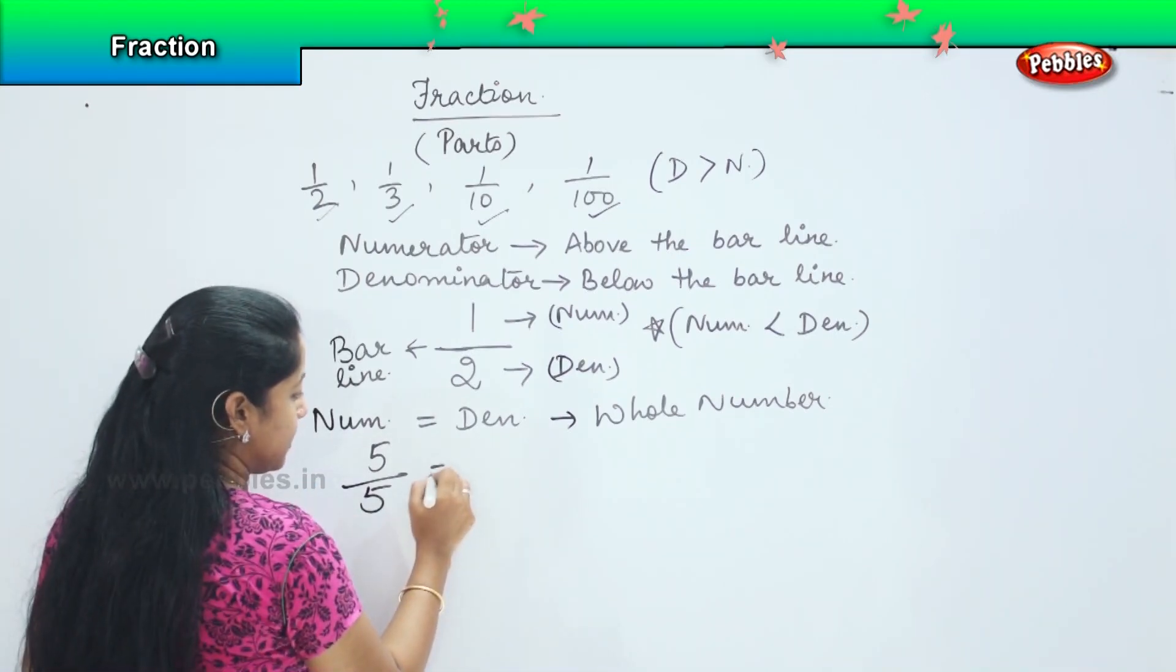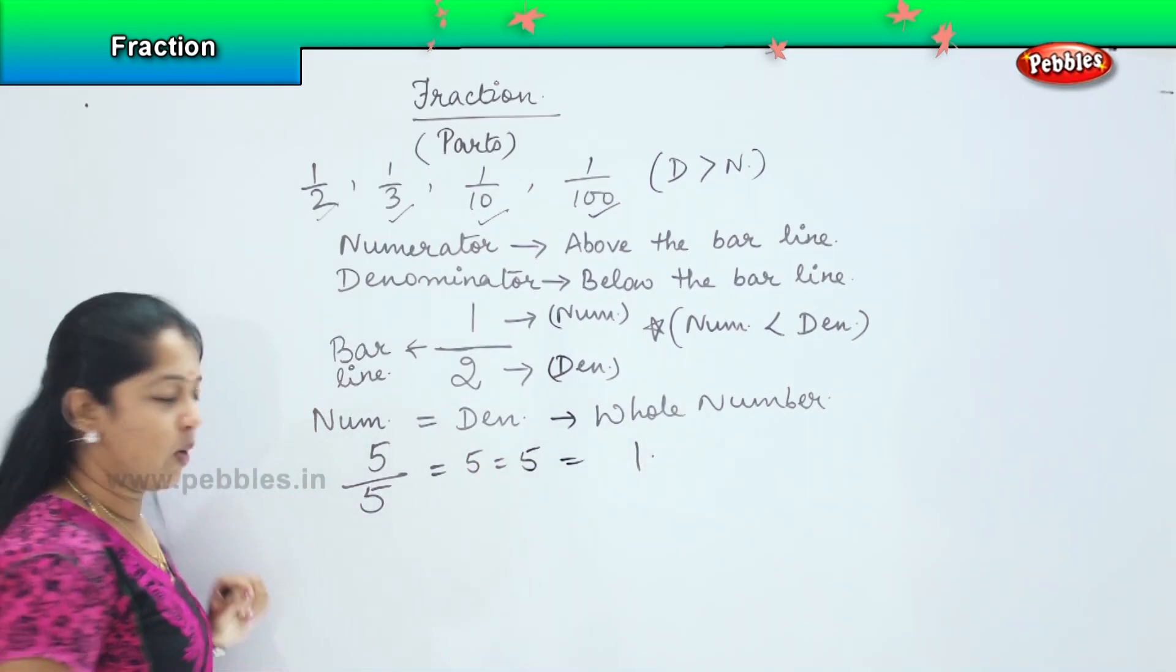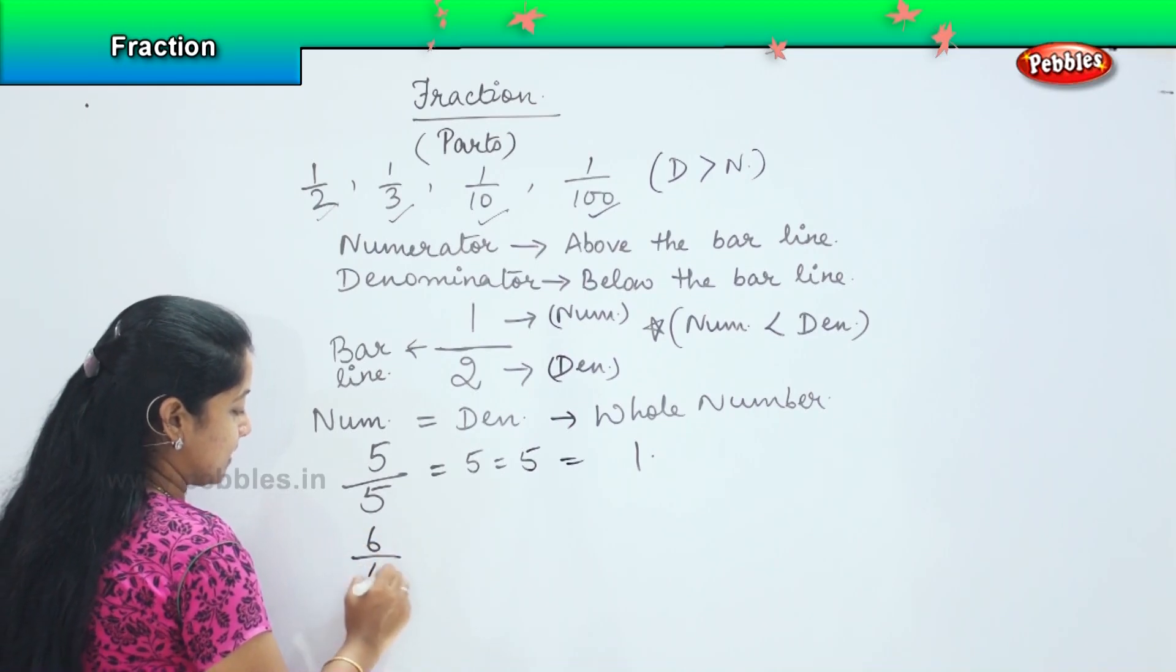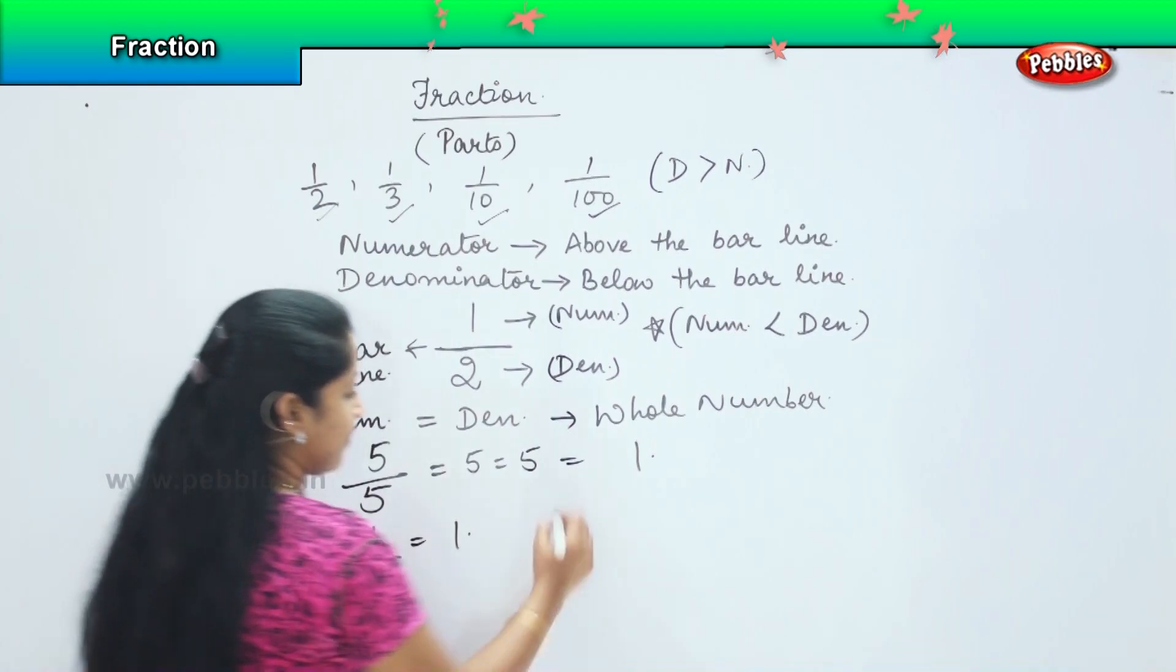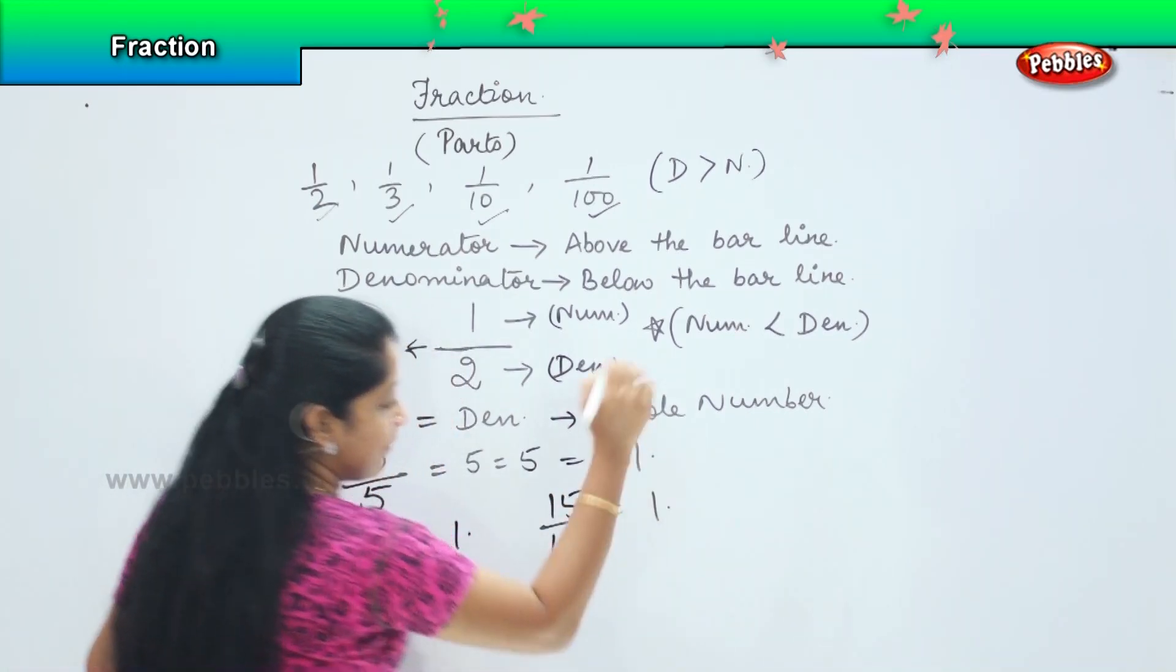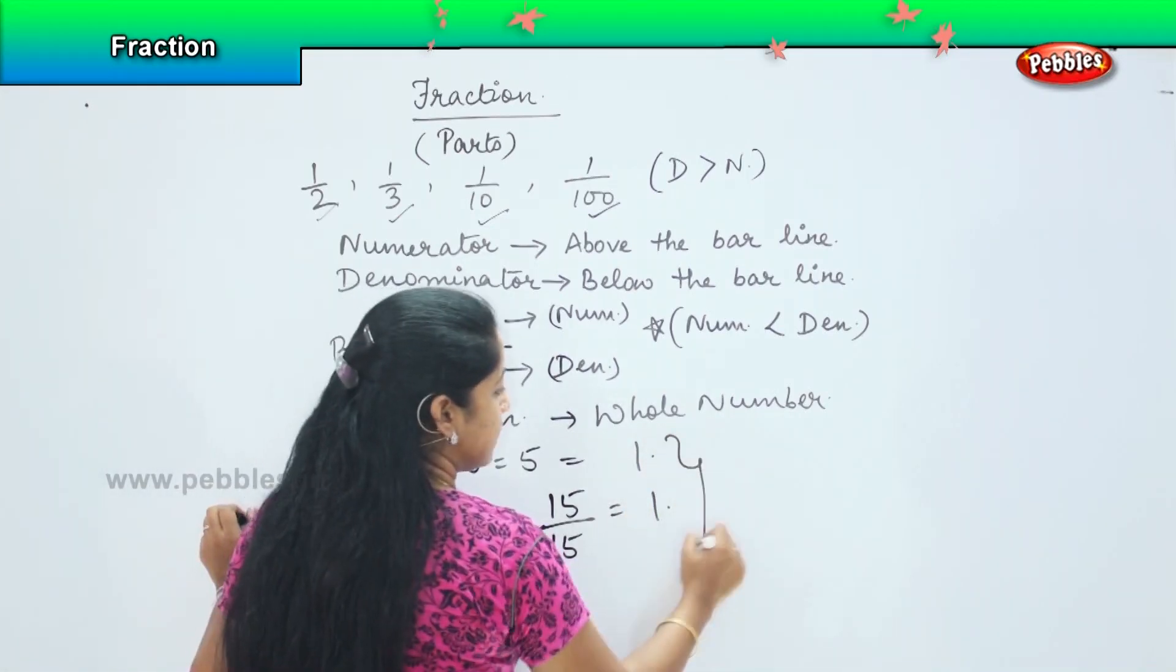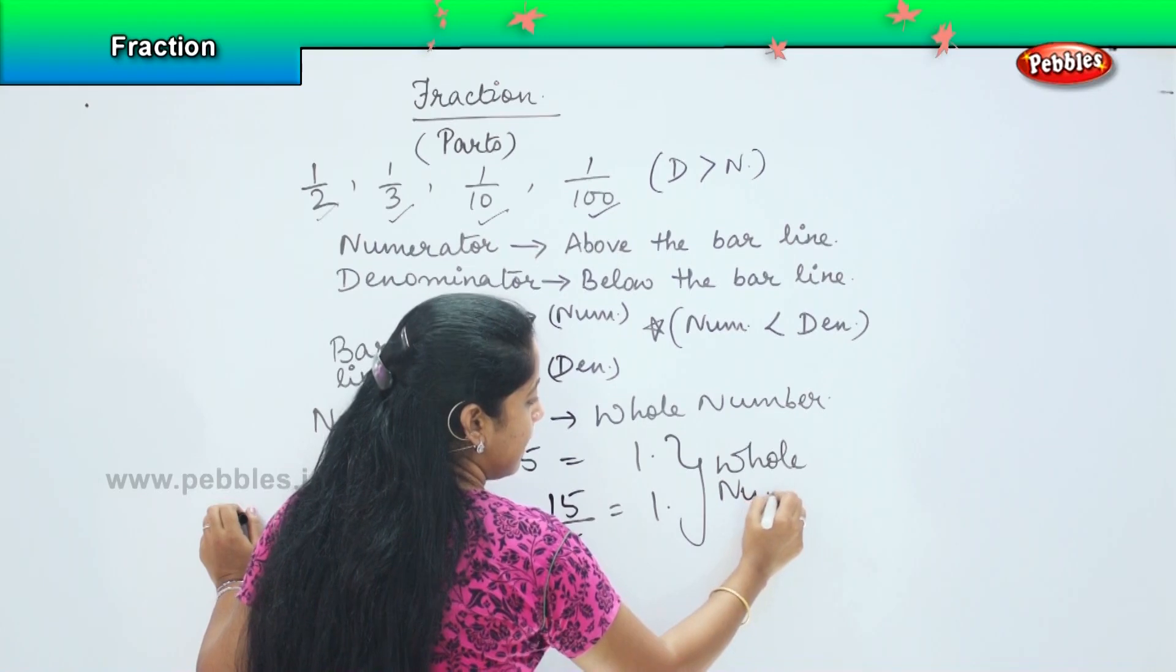Similarly, 6/6—again it is 1, it is the whole number. 15/15—again it is the whole number. So in all these cases this becomes the whole number.